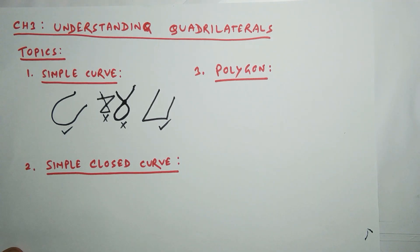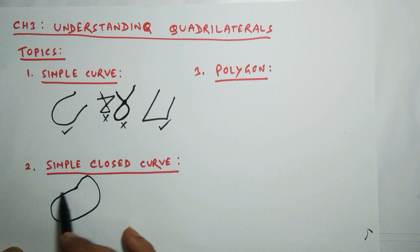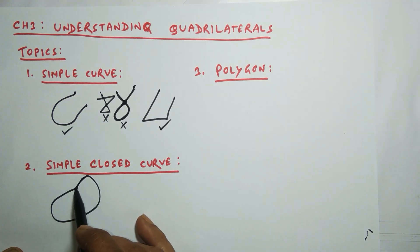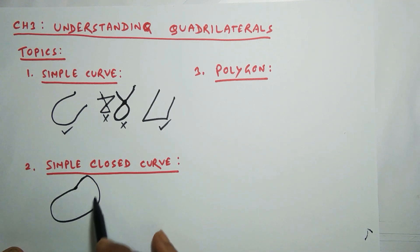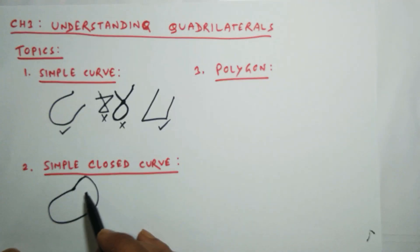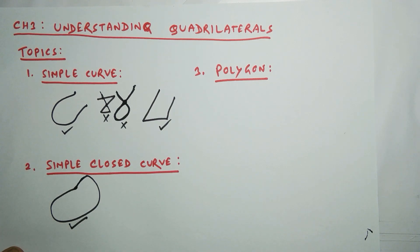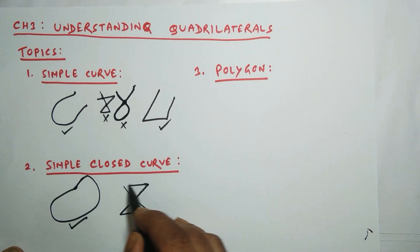The second definition: 'simple closed curve.' A closed curve which does not intersect itself is a simple closed curve. Look at this closed curve — it is closed because the starting and end points meet each other. This closed curve has not crossed or intersected itself anywhere, so this is a simple closed curve.